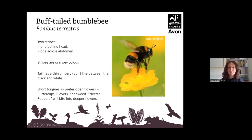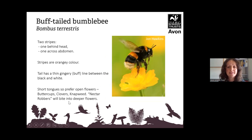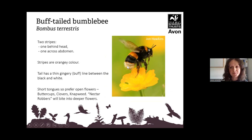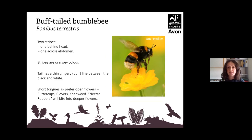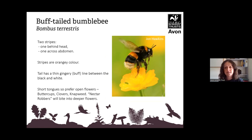The buff-tailed bumblebee, Bombus terrestris, has two stripes — one behind the head and one across the abdomen — in an orangey colour. The queen has a buff-coloured tail the same shade as the two stripes. Workers and drones have a very faint buff-coloured line between the black and white on the abdomen — that's how you identify them. They have short tongues so they prefer open flowers such as buttercup, but they're also called nectar robbers — if desperate, they'll bite into a deeper flower to get nectar and pollen.